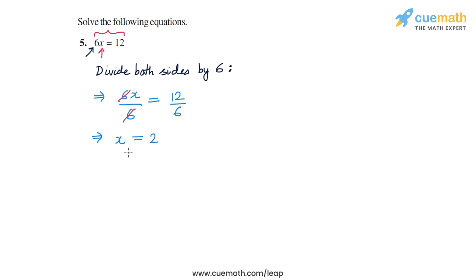So x is equal to 2 is the solution of this equation and we can verify that it is correct. If we substitute x equal to 2 into the equation we get 6 times 2 is equal to 12 which is correct.